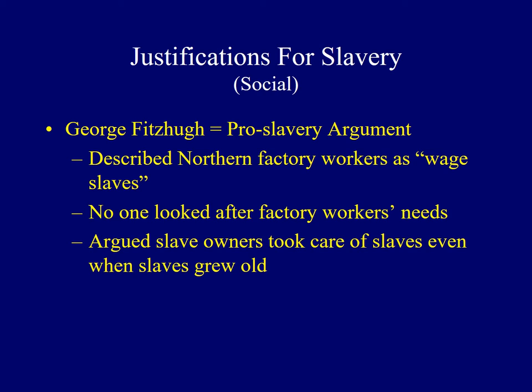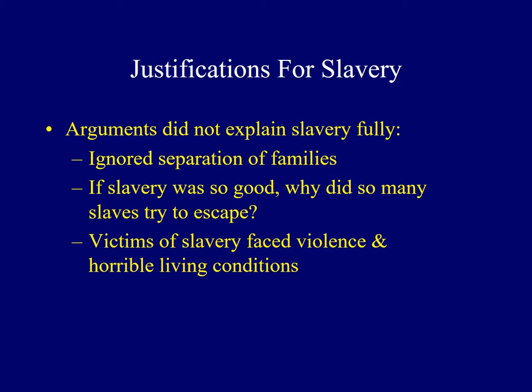Additional arguments came from a man named George Fitzhugh, a supporter of the pro-slavery argument. Fitzhugh compared life for slaves in the South to conditions faced by factory workers in the North and described factory workers as wage slaves. Wage earners only received a paycheck, and no one cared about their homes, clothing, food, or other necessities. Instead, Fitzhugh argued, slave owners cared for and looked after their slaves as they grew older. Of course, the arguments of men like Fitzhugh were racist and only considered part of the story — they didn't discuss the separation of families, didn't explain why so many slaves tried to run away, and failed to acknowledge the violence and degradation associated with slavery overall.